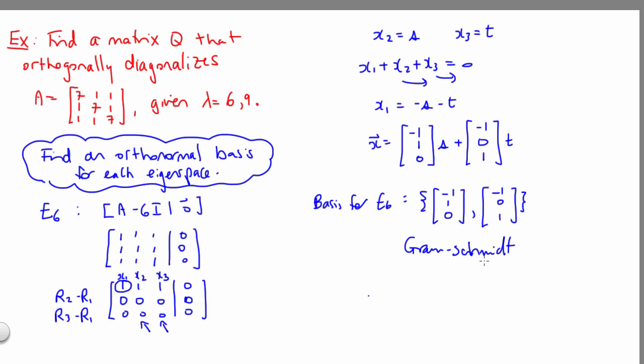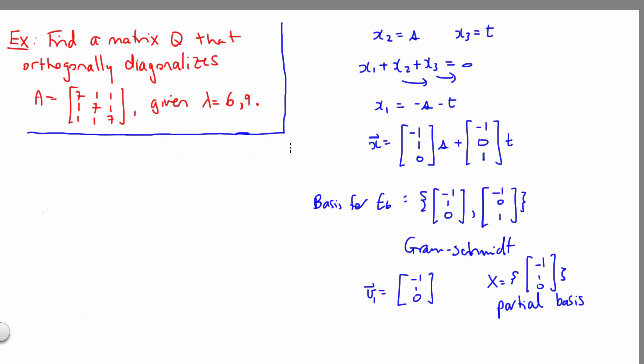So let's start our Gram-Schmidt process. We grab the first vector, call that v1, and that just gets added directly to our set. This set x that we're building is what I usually call a partial basis. So after each step, this set x will be updated, and we'll be building up an orthogonal basis, eventually an orthonormal basis for this eigenspace. I've kept the original problem written up over here in case we want to refer back to that later, and let's continue with our Gram-Schmidt process. So at this point, we've done the first step.